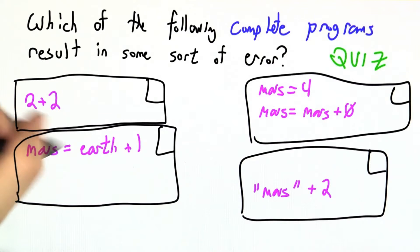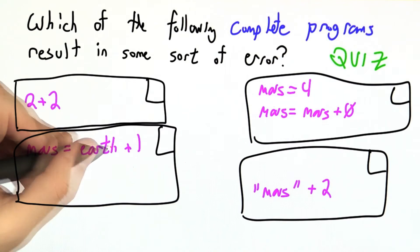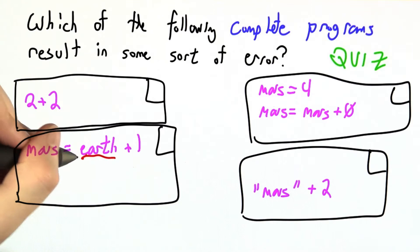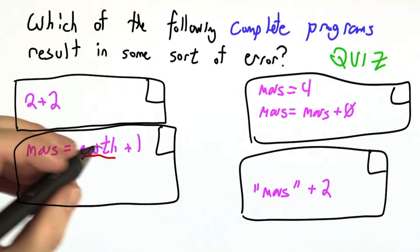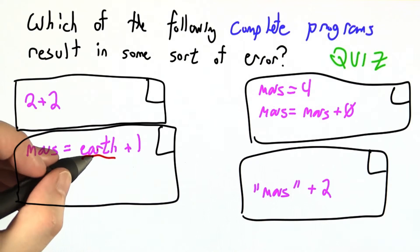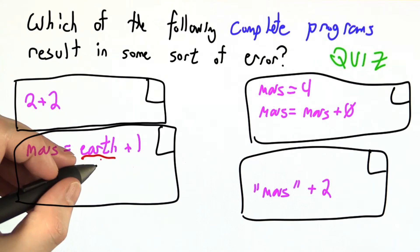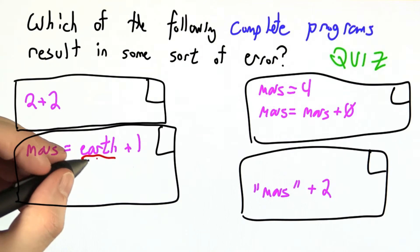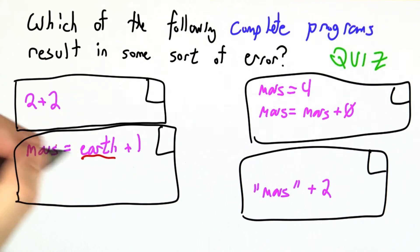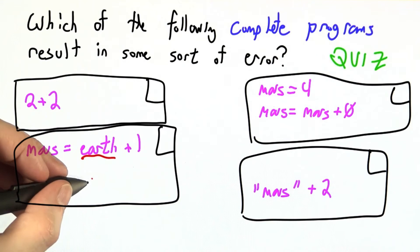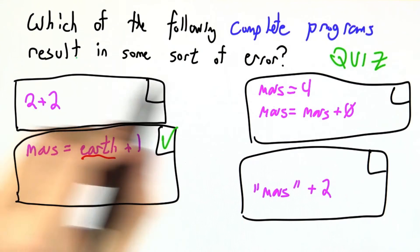Down here, Mars equals Earth plus 1, there is actually going to be a problem here, and the problem relates to Earth, which is a variable that's used before it's being defined. Python's going to emit some sort of runtime error saying, I don't know what Earth is, so I don't know how to assign Earth plus 1 to the variable Mars. So this one will result in some sort of error.